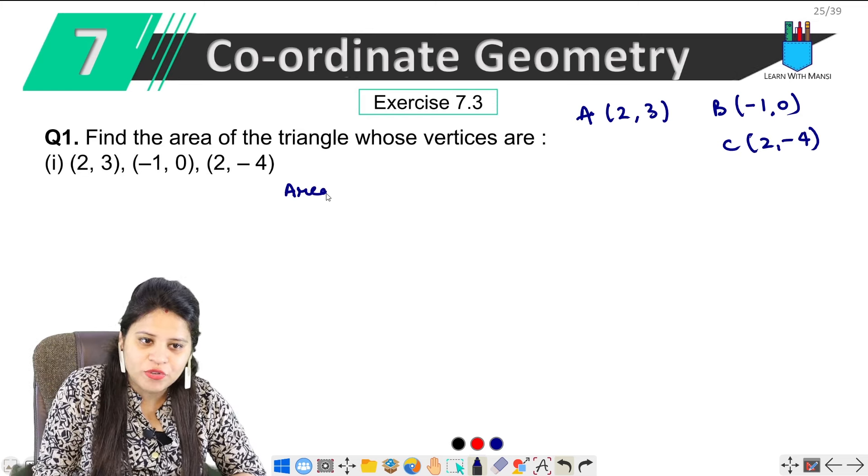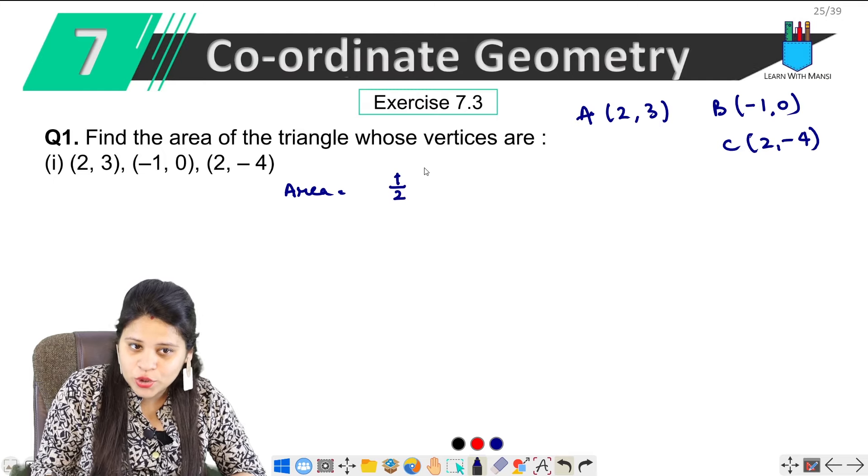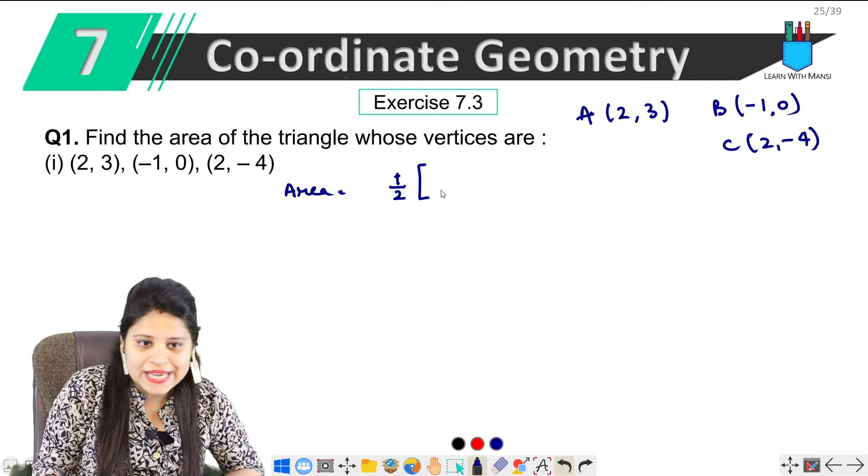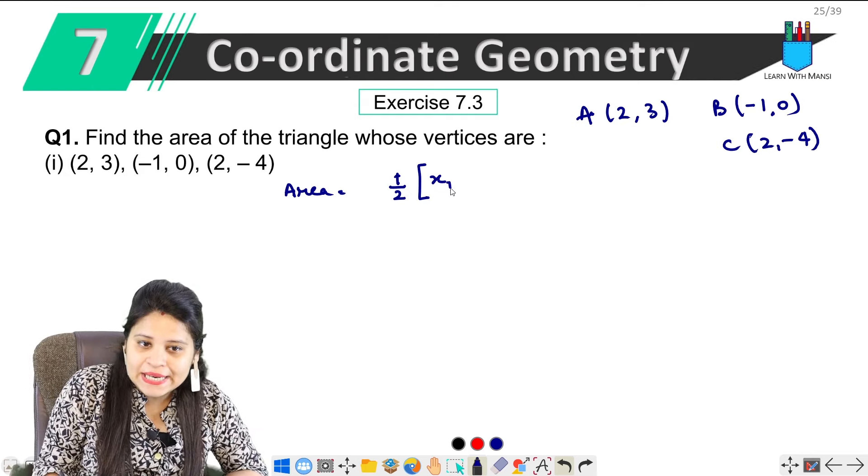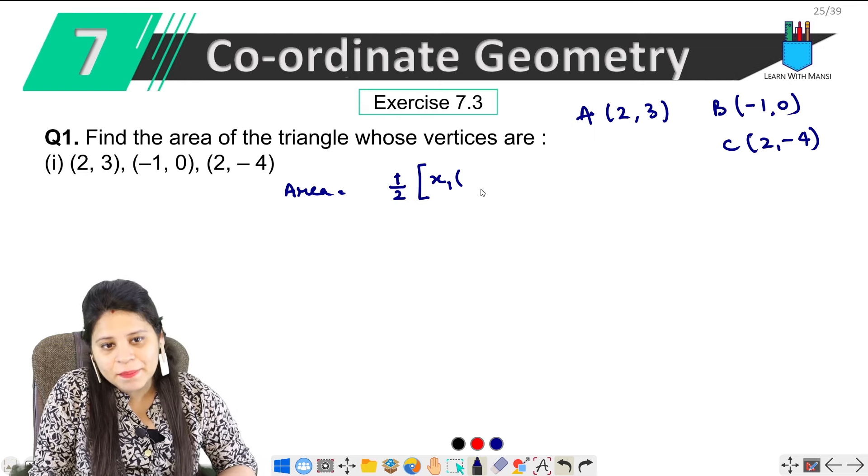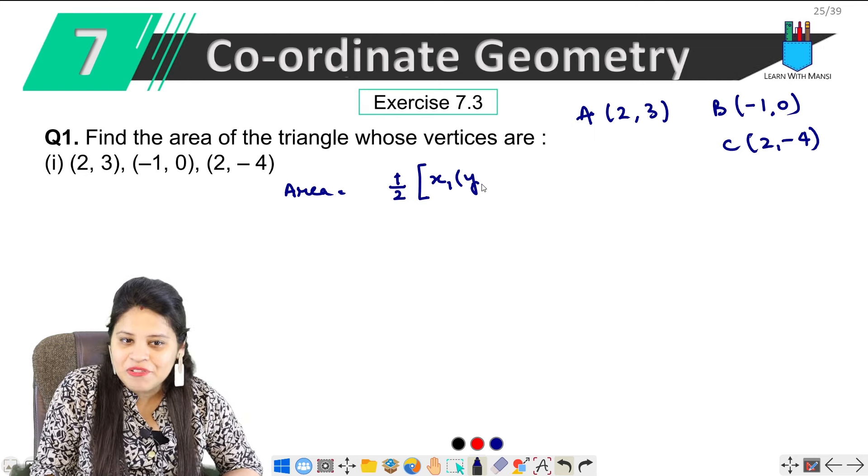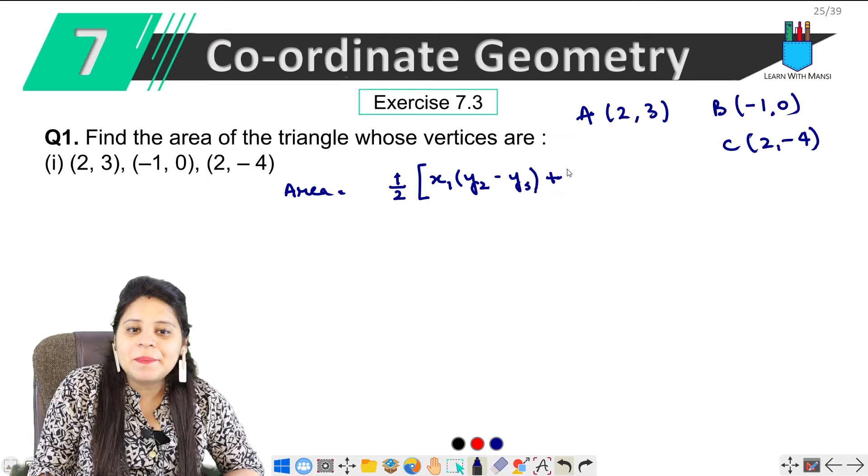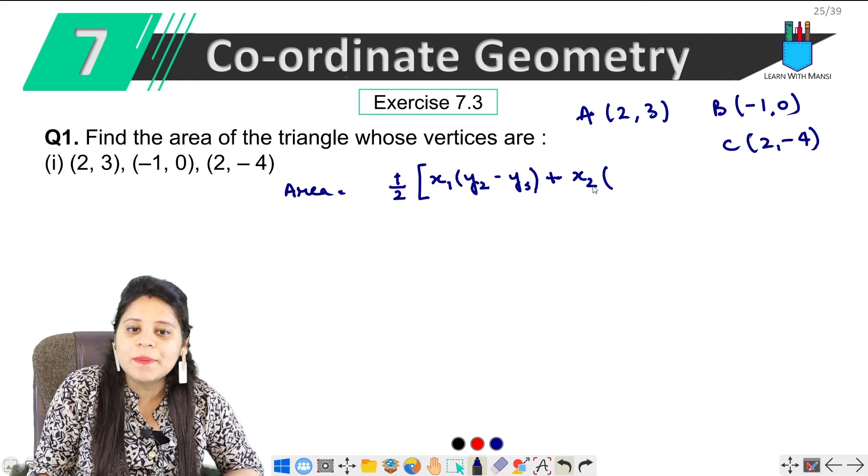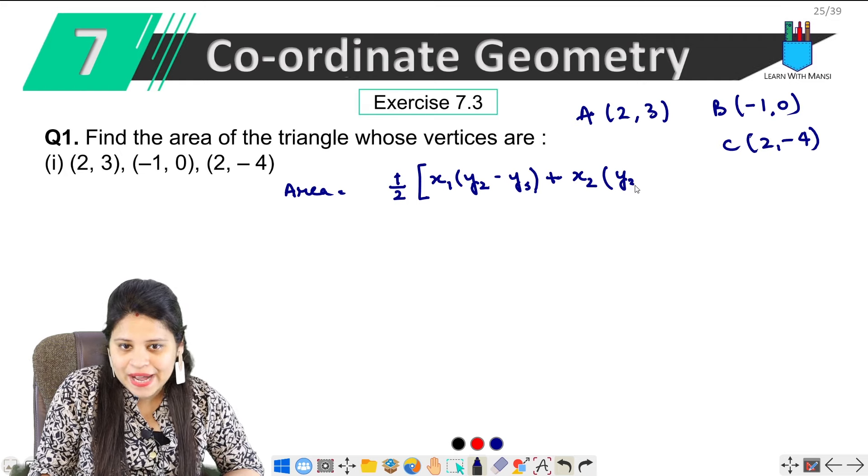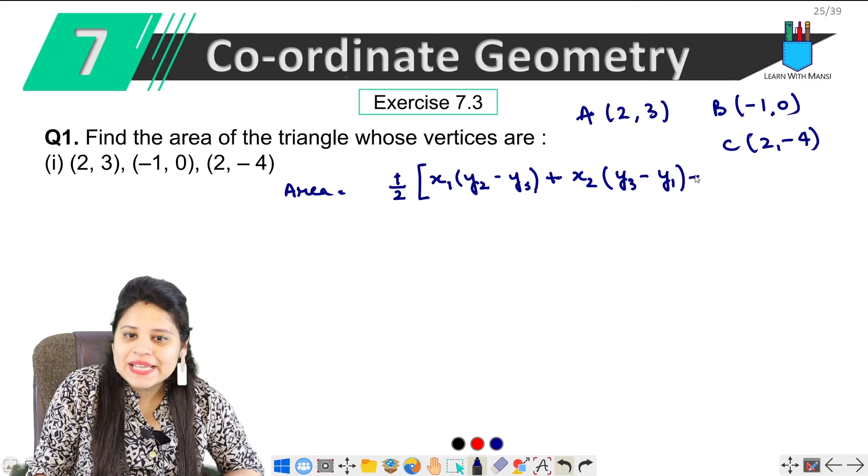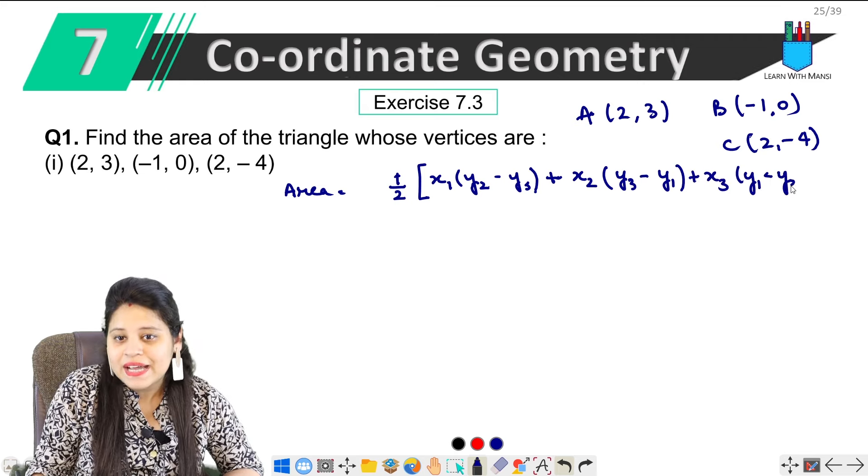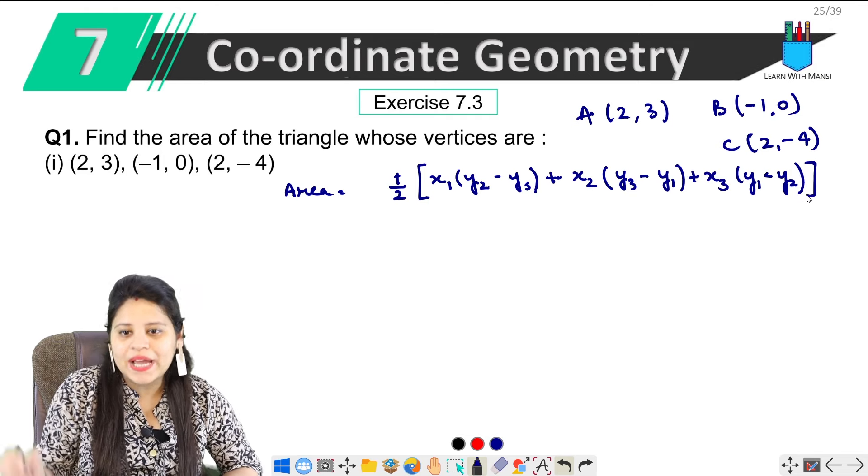Now I will write the formula here. So the area of triangle is 1 upon 2. This is a big formula. We have taken the formula here and followed it. First we have x1(y2 - y3), then plus x2(y3 - y1), then plus x3(y1 - y2). This is our formula.